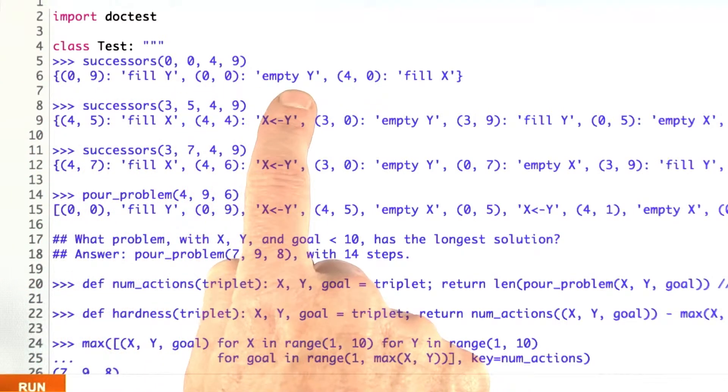We call that emptying y, but of course emptying 0 gives you 0, so it could have been the no-op, but that's just the way the successor function works out. Then 4, 0 is filling x.